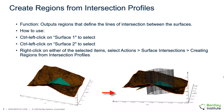It is also possible to create a region object which follows the intersection pathway between two surfaces. The region is automatically output when two surfaces are intersected in the software. It is also possible to separately generate a surface intersection region under Actions, Surface Intersections, Creating Regions from Intersection Profile.